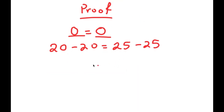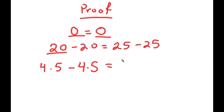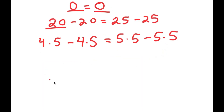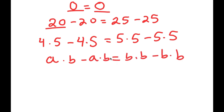I'm going to rewrite 20 as 4 times 5, so I get 4 times 5 minus 4 times 5 equals 25 minus 25. Rewriting 25 as 5 times 5 gives 4 times 5 minus 4 times 5 equals 5 times 5 minus 5 times 5. Notice we can factor the greatest common factor from each side.